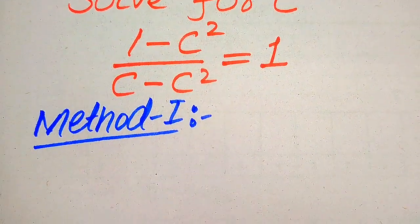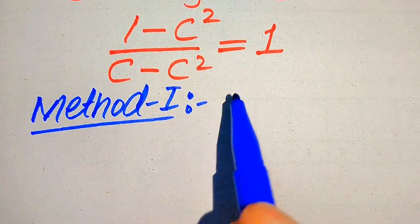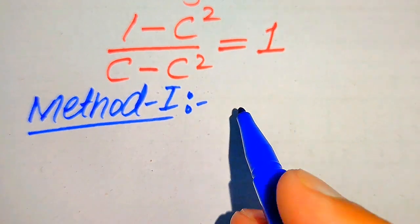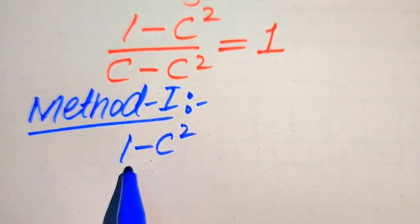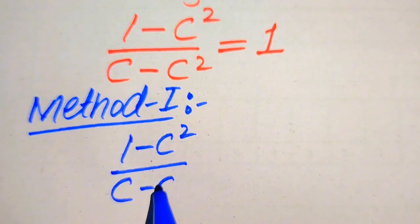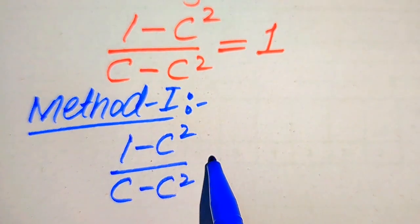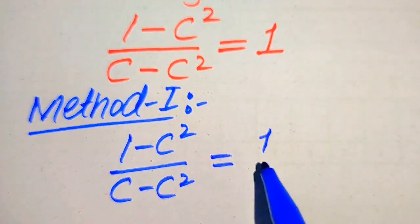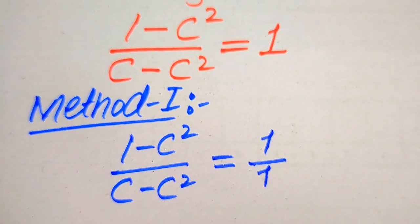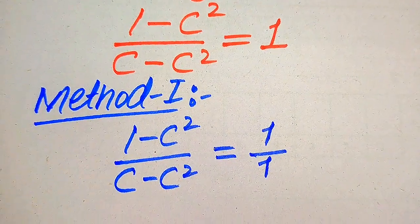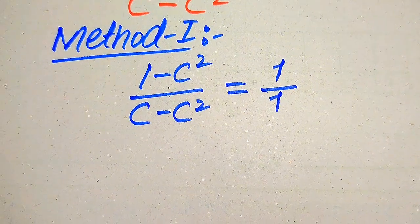Now we move towards our first method. In the first method, you see the denominator on the right hand side is 1, and we write it as 1 minus C square divided by C minus C square is equals to 1 divided by 1, because the denominator on the right hand side is 1, so we write it in this form.